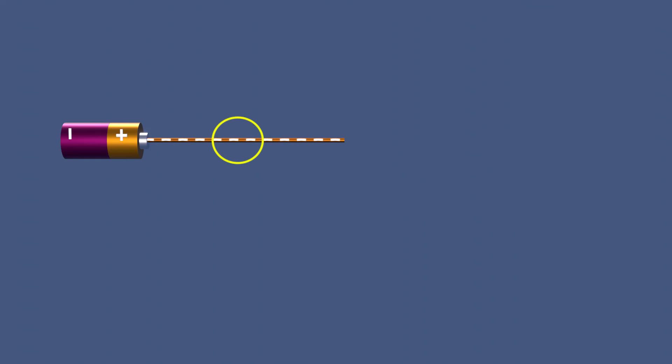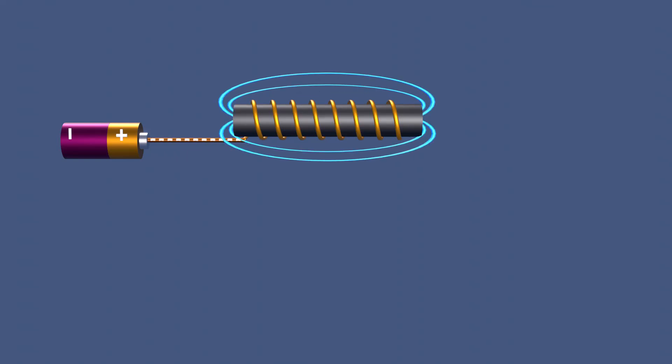When an electric current flows through a wire, it generates a magnetic field around the conductor. By winding the wire into a coil, the magnetic field becomes concentrated and intensified. Adding a magnetic core further enhances the strength of this field.